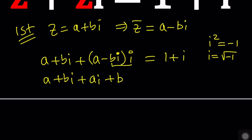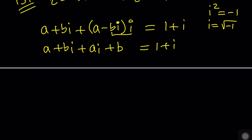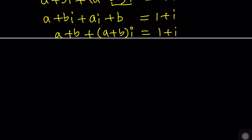On the left-hand side, the real parts give A plus B, and the imaginary parts give (A plus B)i, all equal to 1 plus i. This gives you two equations, but wait — aren't they the same thing? Yes, they are. So this is a system with infinitely many solutions, because A plus B equals 1 is just one equation and you can play with the values of A and B.